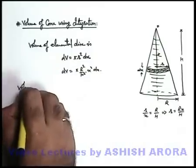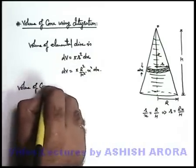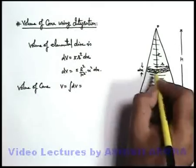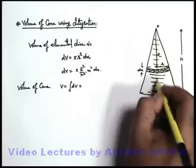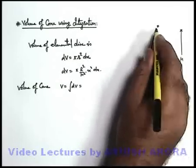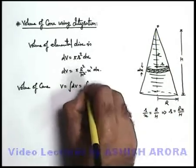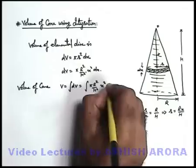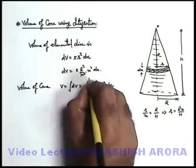Now, if we talk about the volume of cone, this volume can be written as integration of the volume of such elemental disc from x varying from zero to h. It'll be integration of π(R²/h²)x²dx from zero to h.